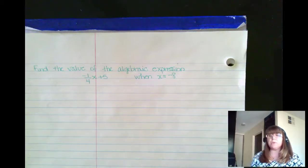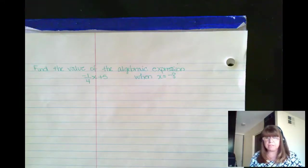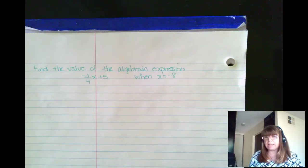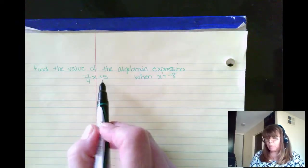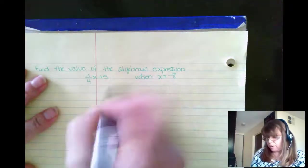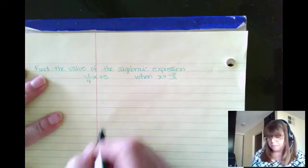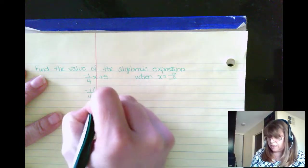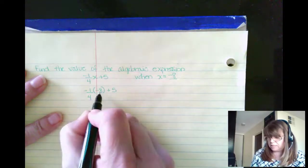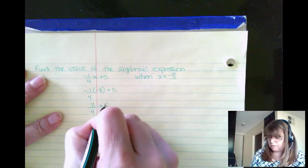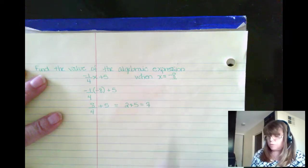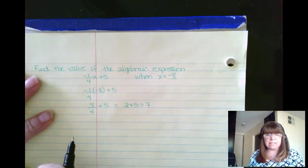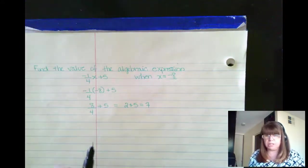Now in the previous examples, we could only bring it down to like terms. I couldn't solve for x because number 1, it didn't equal anything, nor was I given the value of x. But when I'm given the value of x, I can solve, I can find the value of my algebraic expression. For example, negative 1 fourth x plus 5. And we want to find the value when x is negative 8. So wherever I see an x, I'm going to plug in the value they give me. So negative 1 fourth x would be a negative 8 plus 5. A negative 1 times a negative 8 is positive 8 fourths plus 5. But 8 fourths is another way of saying 2. So 2 plus 5. The final value is 7 when x is negative 8.